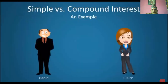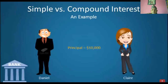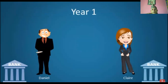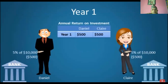Daniel and Claire each deposit $10,000 in high interest savings accounts. However, the bank that Daniel has deposited his money at offers only simple interest, while the bank that Claire has deposited her money at offers compound interest. After the first year, both Daniel and Claire have made $500, or 5%, on their initial deposit.